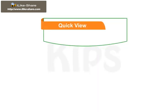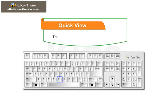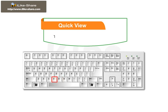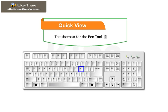Let me share some interesting shortcut tips with you. The shortcut key of the Brush Tool is B. The shortcut of the Selection Tool is V. The shortcut for the Pen Tool is P. The shortcut of the Oval Tool is O.